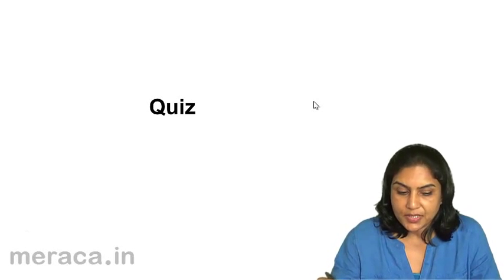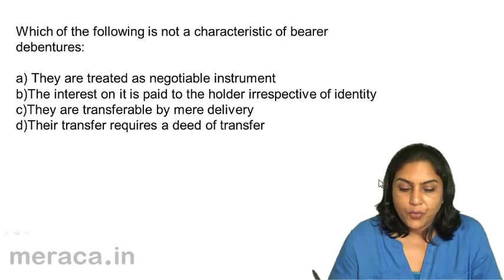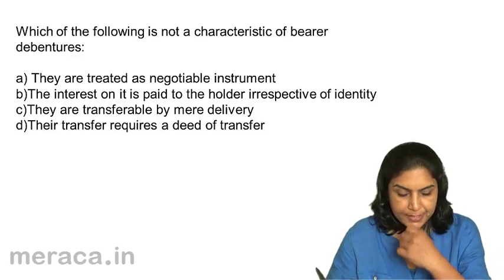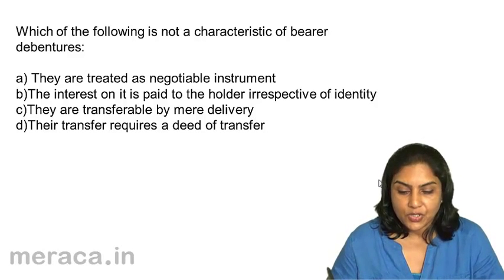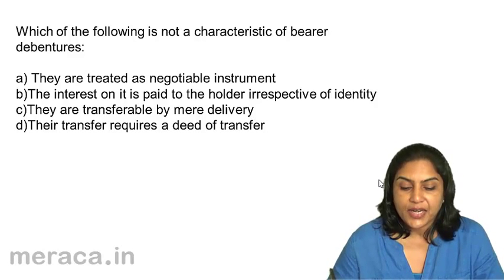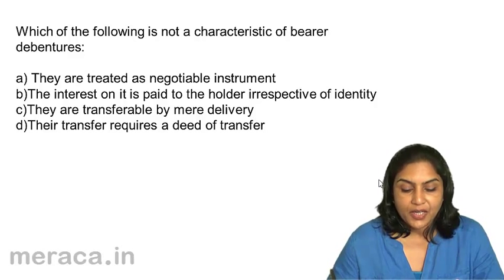Let us take a short quiz to test our understanding so far. Which of the following is not a characteristic of bearer debentures? A. They are treated as a negotiable instrument. B. The interest on it is paid to the holder irrespective of identity. C. They are transferable by mere delivery. D. Their transfer requires a deed of transfer.